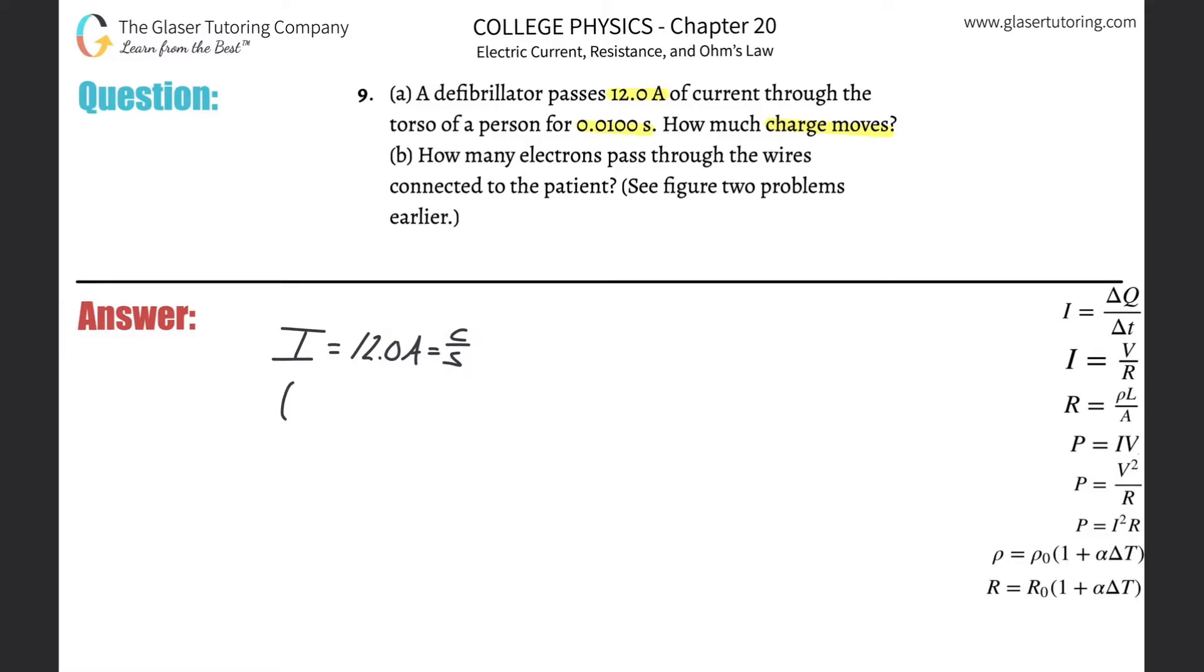We also know the time, right? The time that this current is passing is 0.01 seconds. And then we need to find the amount of charge that is flowing through.